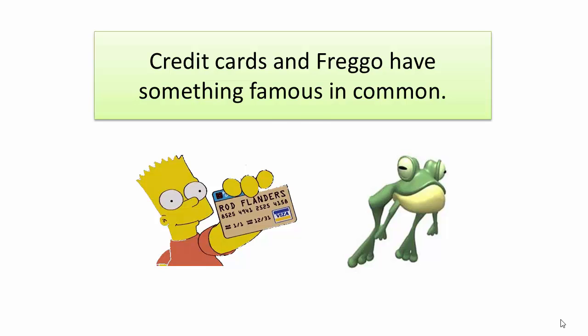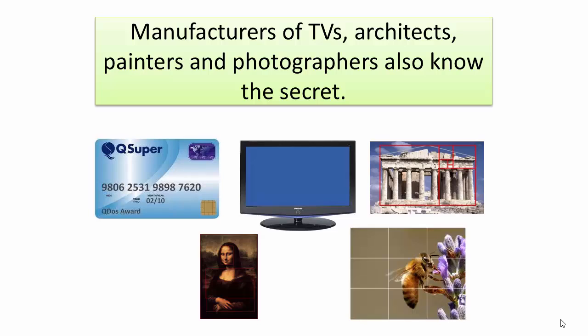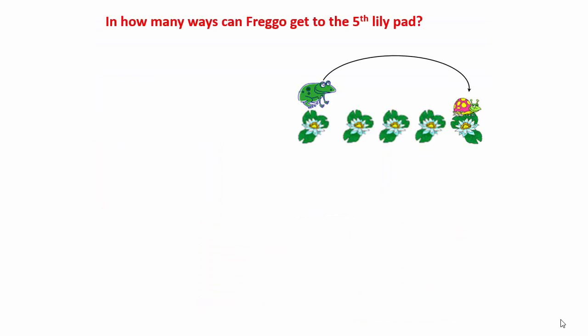Some people such as manufacturers of TVs, architects, painters, photographers, and others already know the secret. Firstly, let's see how Freggo can get to the fifth lily pad to reach the bug. To do that, we will complete the table.